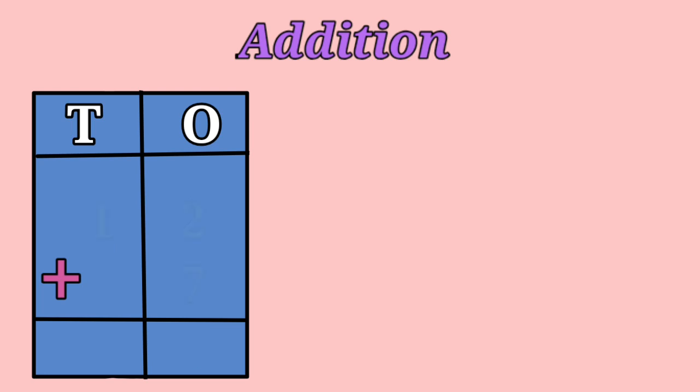Let's see another example. In one's place, we have 2 and 7. And in 10th place, we have only single-digit number that is 1. So children, what shall we do now? We shall first add 1's place, that is 2 and 7.